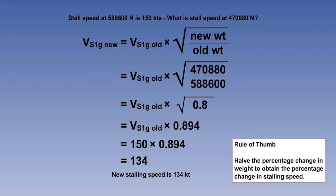A useful rule of thumb that can be derived from such calculations is that halving the percentage change in weight, either up or down, will give the approximate percentage change in stalling speed. In the example, a 20% weight reduction gives about a 10% speed reduction. This rule of thumb can be very useful, not least as a gross error check during exams.